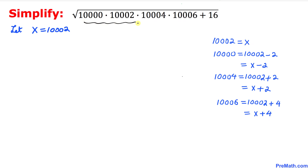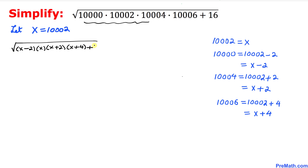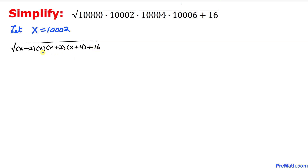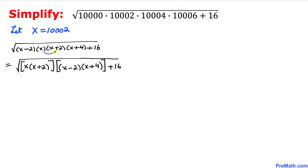Thus the whole radical can be written as the square root of (x minus 2) times x times (x plus 2) times (x plus 4), plus 16. Now let me rearrange these terms — I'll group (x minus 2) with x in one bracket and (x plus 2) with (x plus 4) in a second bracket, then plus 16.